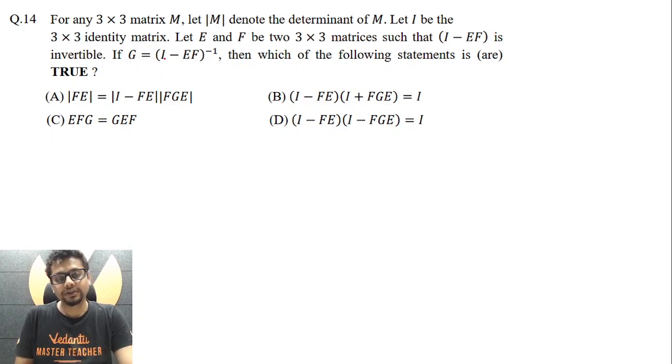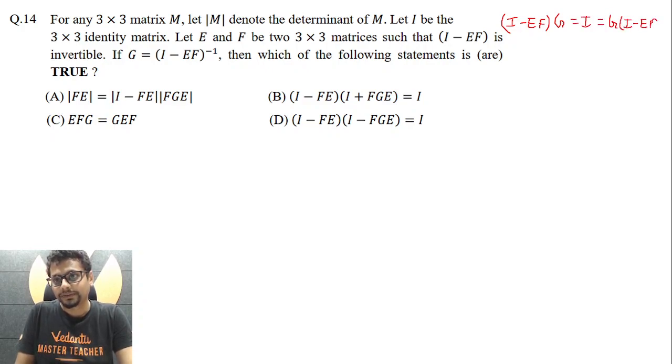So here inverse of (I - EF) is G. So I can say (I - EF) times G is identity matrix, as is G times (I - EF), because inverse of (I - EF) is G. That essentially means G - EFG equals identity matrix equals G - GEF. Now clearly you can see comparing both sides, EF is equal to GEF.